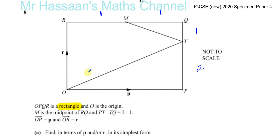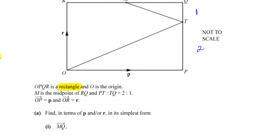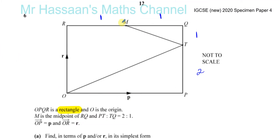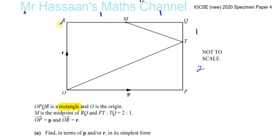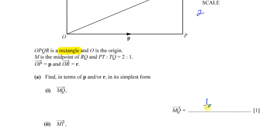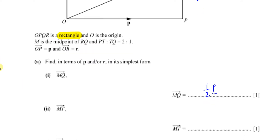OP is vector p and OR is vector r. We've got to find MQ in terms of p and r in its simplest form. MQ is half the length from R to Q because M is the midpoint. The vector from R to Q is the same as the vector from O to P, because it's a rectangle and opposite sides are equal and parallel. So MQ is half of RQ, which is half of OP, which is half of p. So MQ equals ½p.